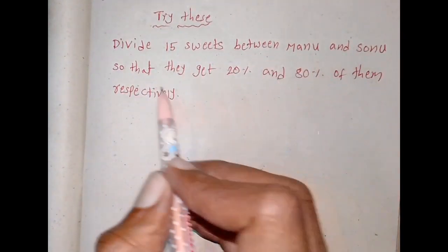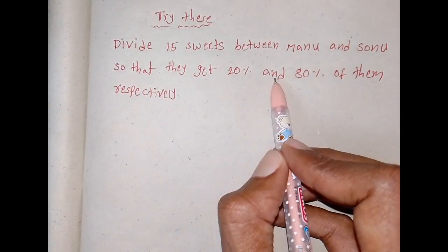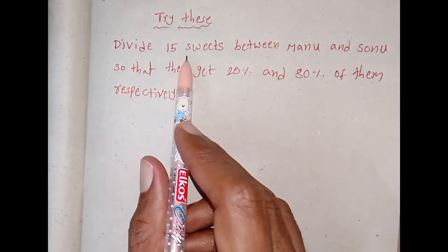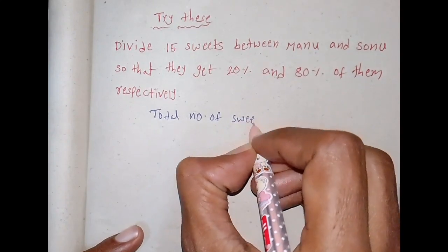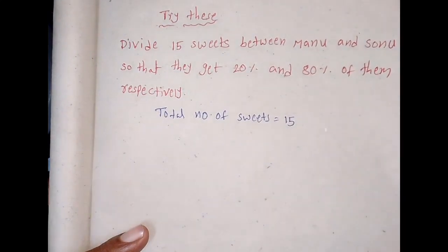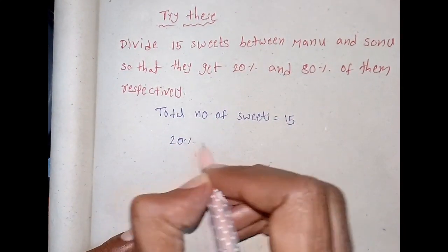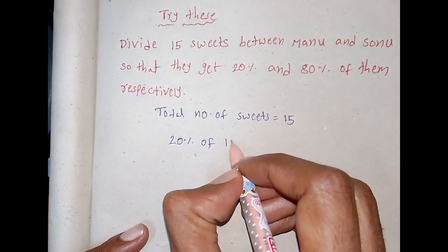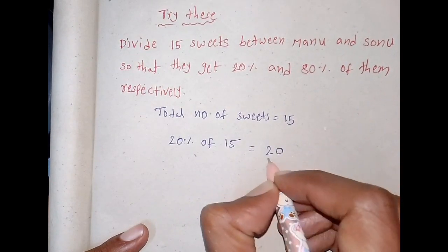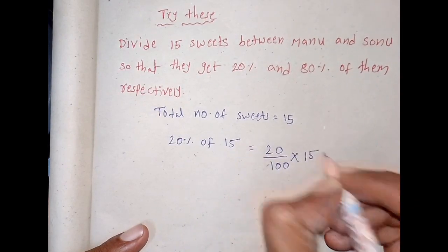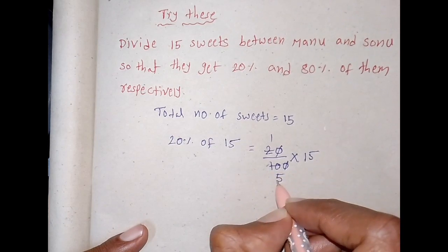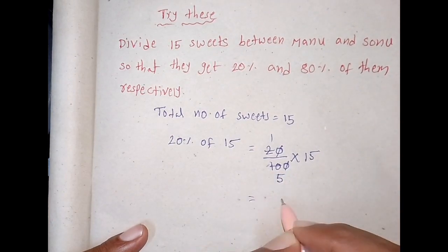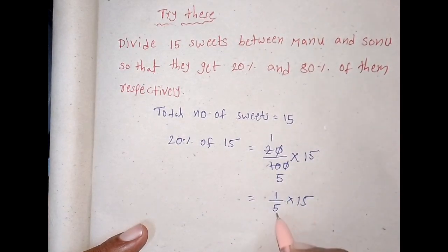Next: divide 15 sweets between Manu and Sonu so that they get 20% and 80% respectively. Total sweets is equal to 15. 20% of 15 equals 20 by 100 into 15. After cancellation, numerator zero and denominator zero get cancelled, giving 1 by 5 into 15, which equals 3.